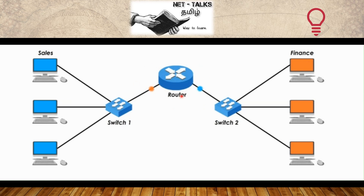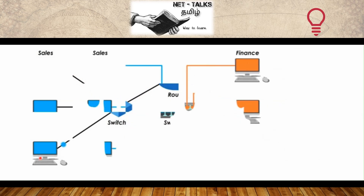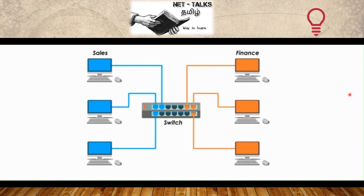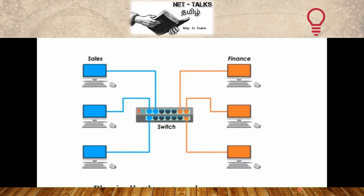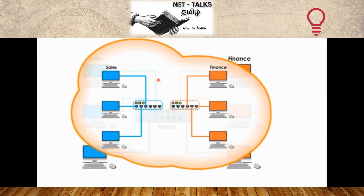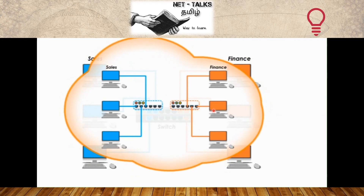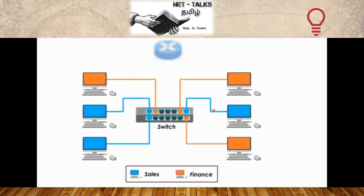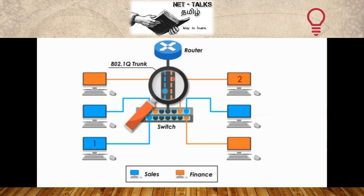Solution 1 is to use different physical switches - one for the Sales team and one for the Finance team, creating two separate LAN networks. Solution 2 is to use VLANs on a single switch, creating logical networks. The Finance team is one logical VLAN and the Sales team is another logical VLAN. They are virtually two independent networks using the same physical switch.